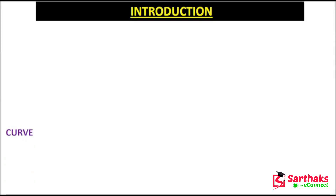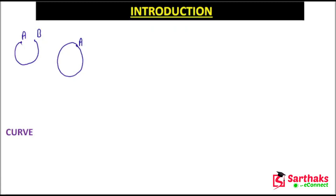You must have seen curves like this. This curve starts from a point A and finishes at a point B — you are not completing the curve. Also, if you have completed the curve, then we call it a circle, where you start from point A and complete it at the same point A and B. You must have also seen curves where you start at some point A and finish at some point B. A line segment is also a curve.